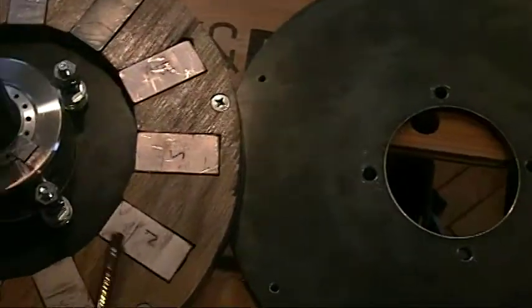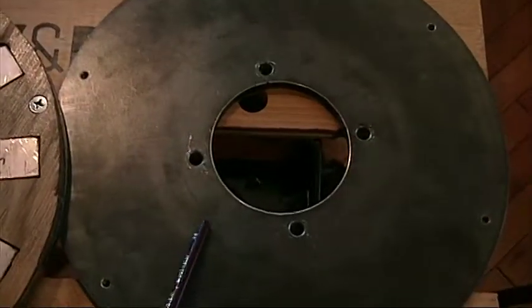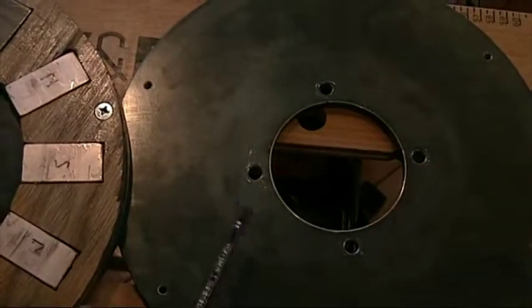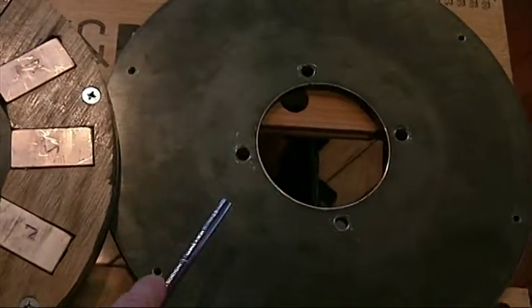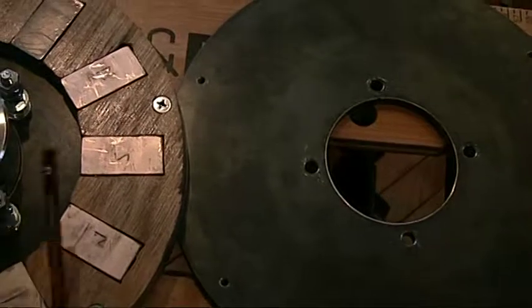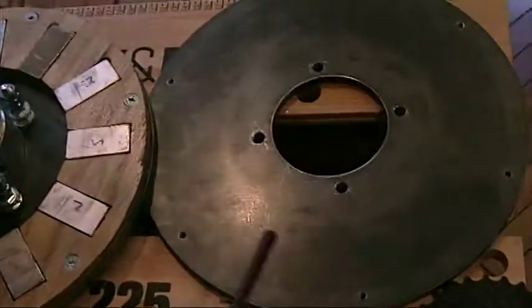What that means is that the flux lines will go from the magnet over to the steel disc here to concentrate and give more of an even field going across the coils. Using the disc here improves the power by 40% in tests that I did with and without this second iron disc.